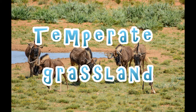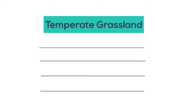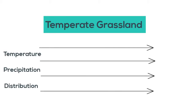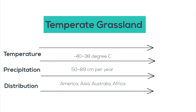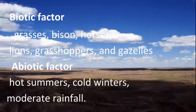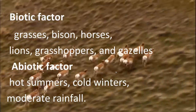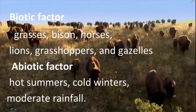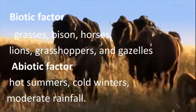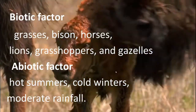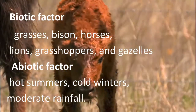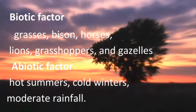Temperate grassland. A biome that is characterized by fertile soils that are able to support a thick cover of grasses is called grassland. Its temperature ranges from minus 40 to 38 degrees Celsius. Its biotic factor includes grasses, bison, horses, lions, and gazelles. Its abiotic factor includes hot summers, cold winters, and moderate rainfall.